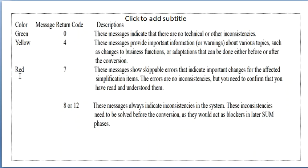When the color is red and the return code is seven, these messages show skippable errors that indicate important changes for the affected simplification item. The errors are not inconsistencies, but you need to confirm that you have read and understood them.